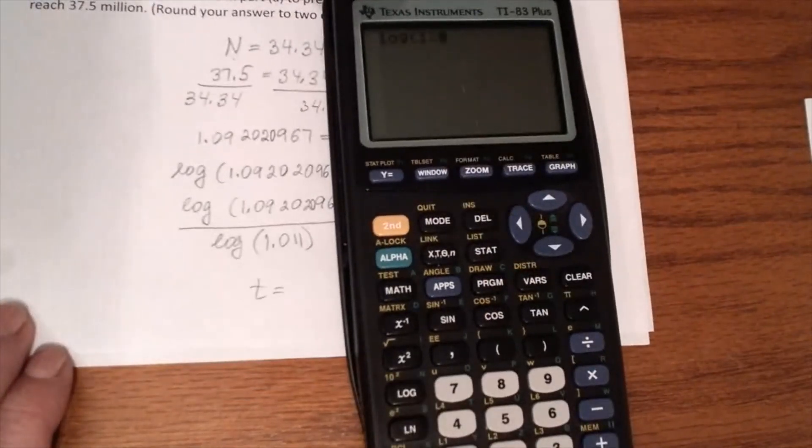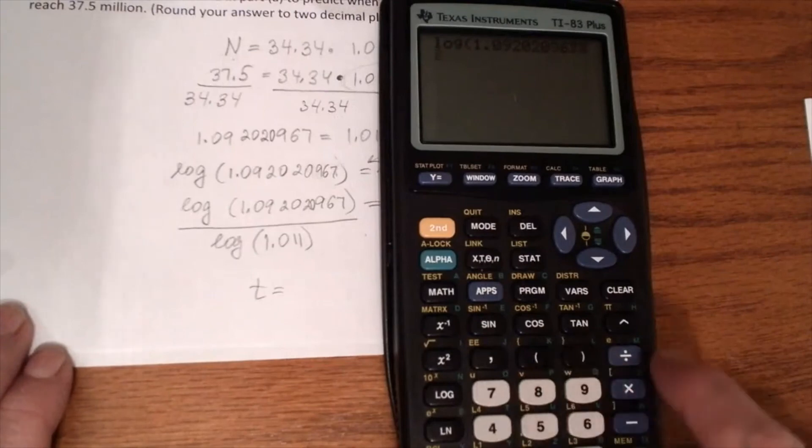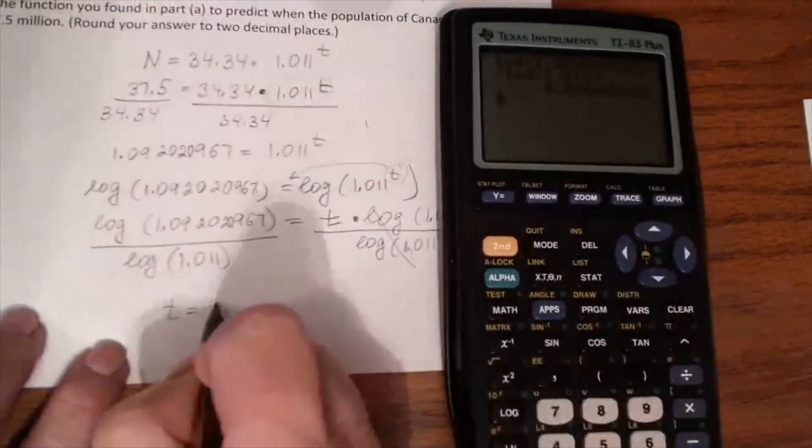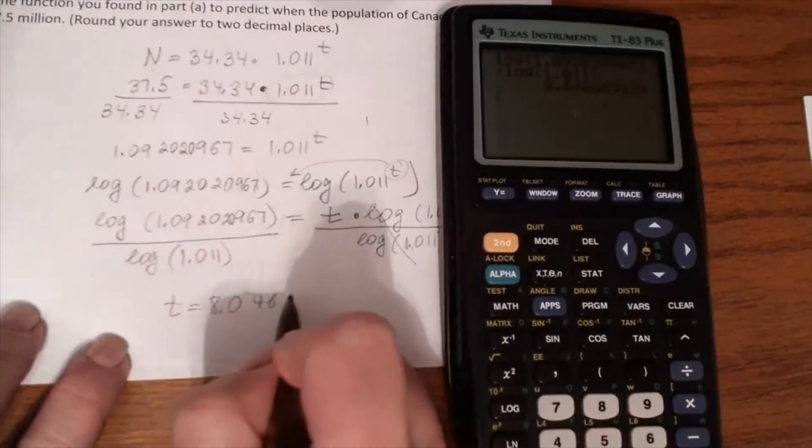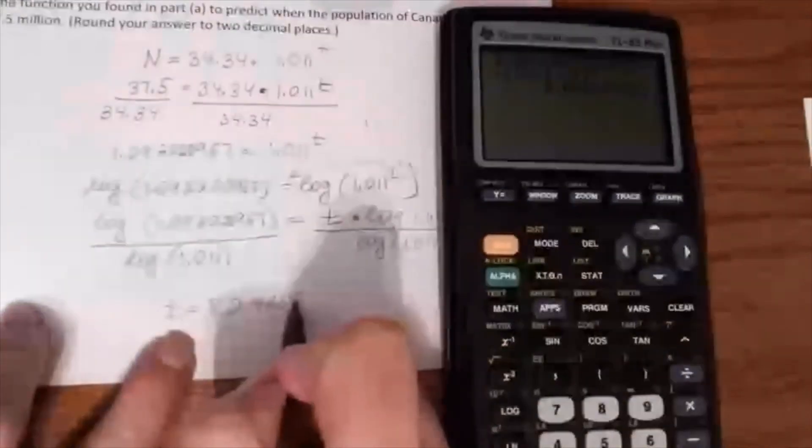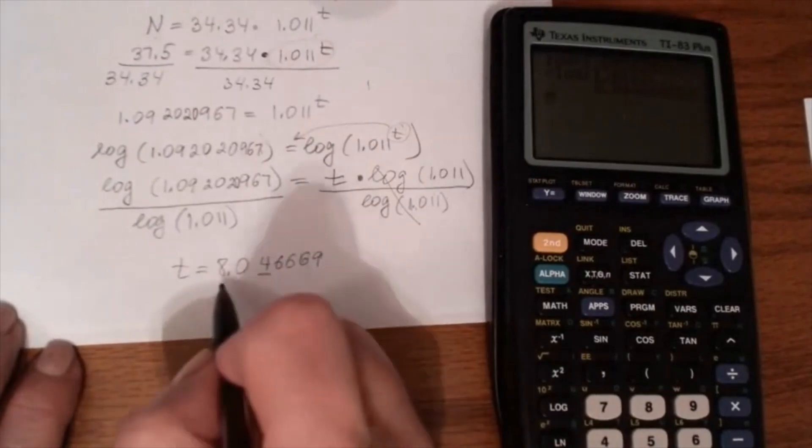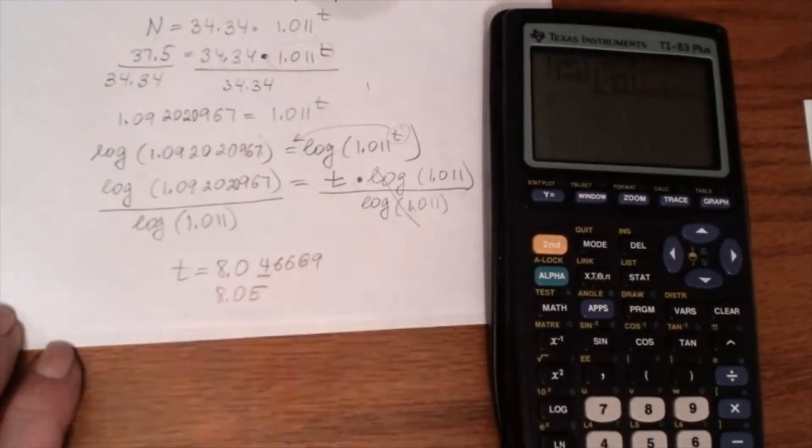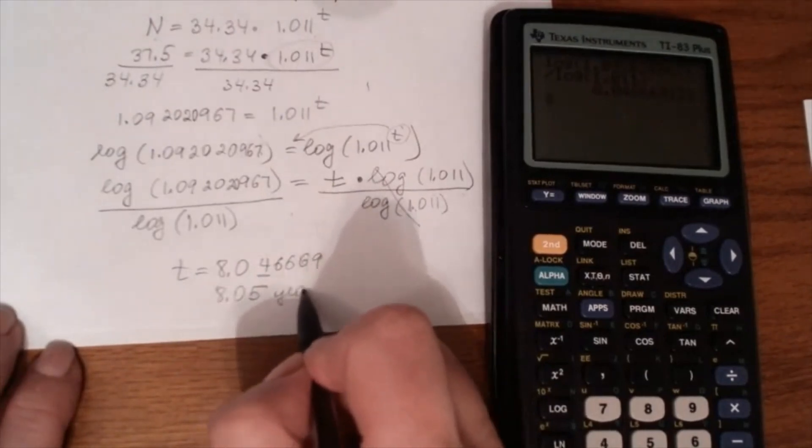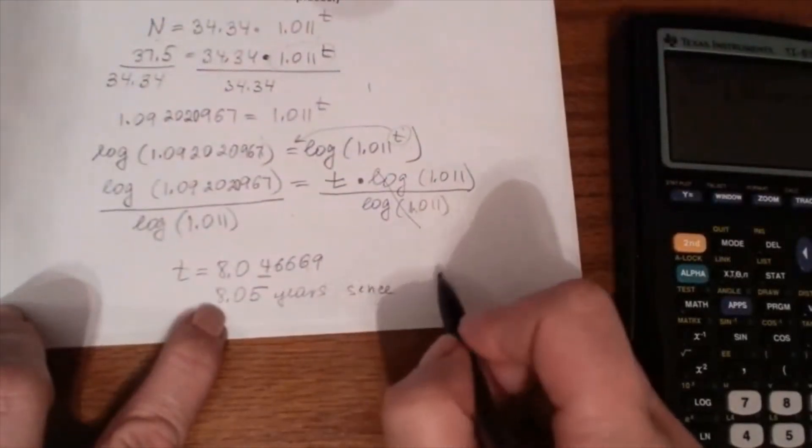Now we need to calculate on our calculator. So the logarithm button is right here. Logarithm 1.092020967 divided by logarithm of 1.011. And the answer is 8.04669, one more six.